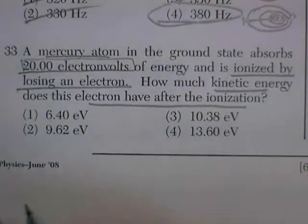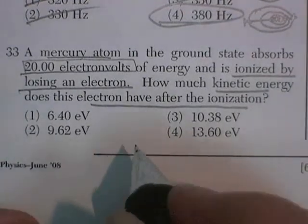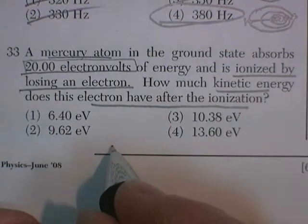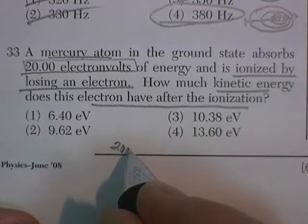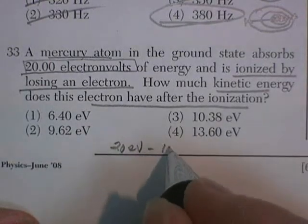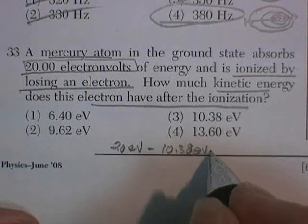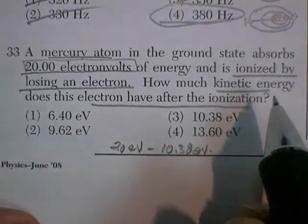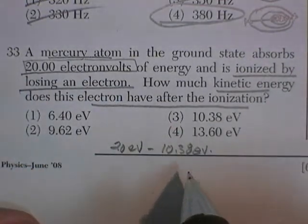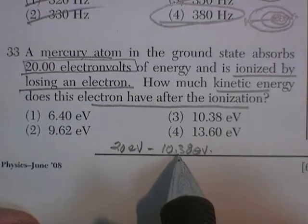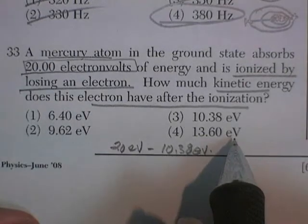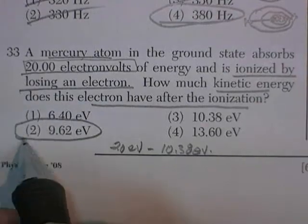So, I've got a certain amount of energy. 20 electron volts. And I lose 10.38 electron volts. And so whatever energy I have left turns into the kinetic energy. So, 20 minus 10 and something is going to leave you 9 and change. And so that's got to be the answer.